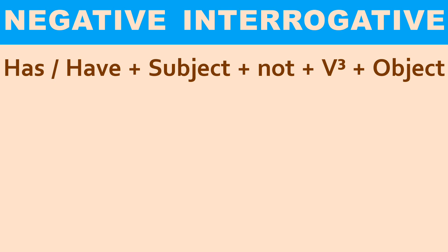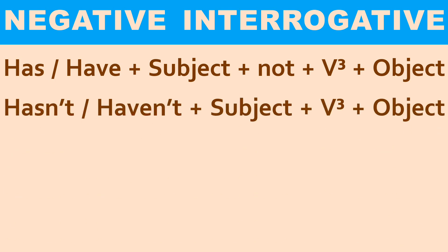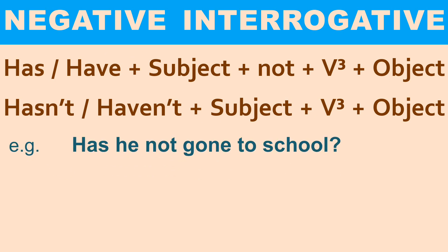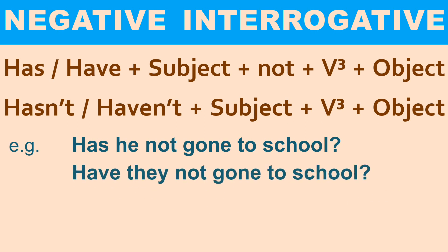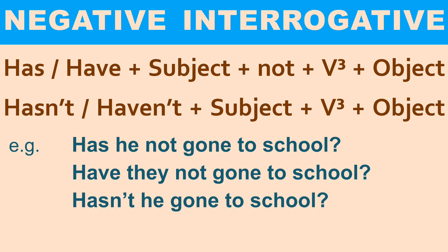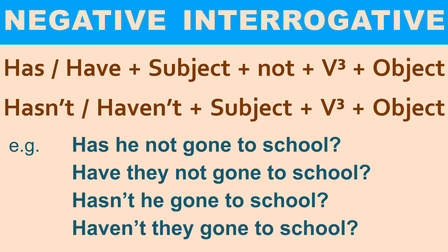Now see the negative interrogative. The structure is the same, but you use not after your subject. It also has a contracted form: hasn't or haven't, then subject, then third form of the verb, then object or complement. Example: 'Has he not gone to school?' or 'Have they not gone to school?' The contracted forms are 'Hasn't he gone to school?' or 'Haven't they gone to school?' In the contracted form, not is written before the subject, whereas in the full form not is written after the subject.